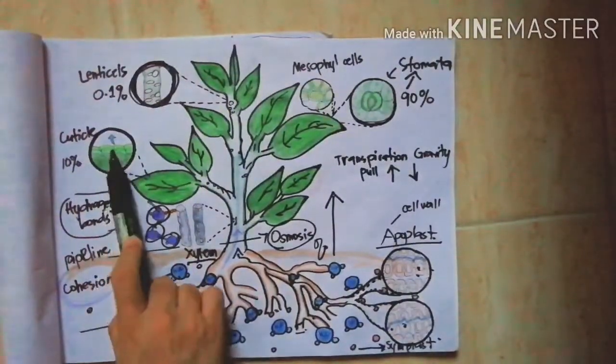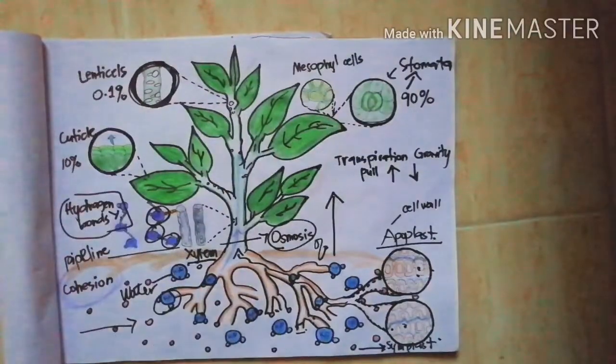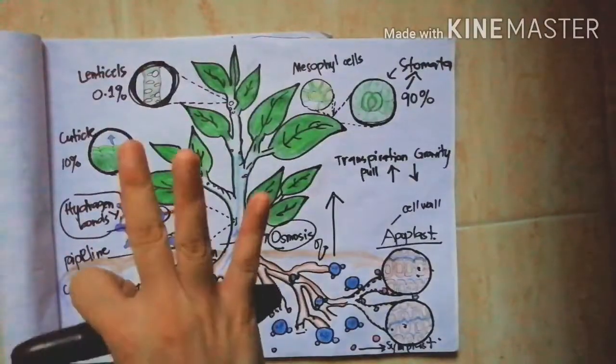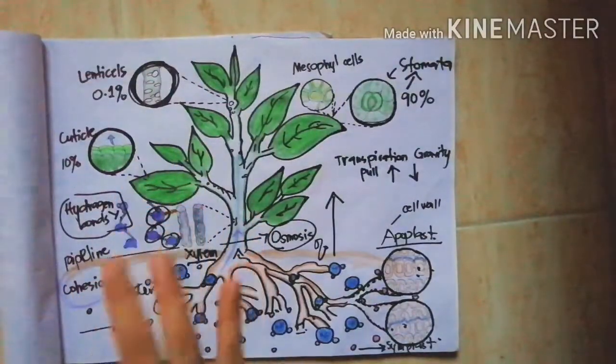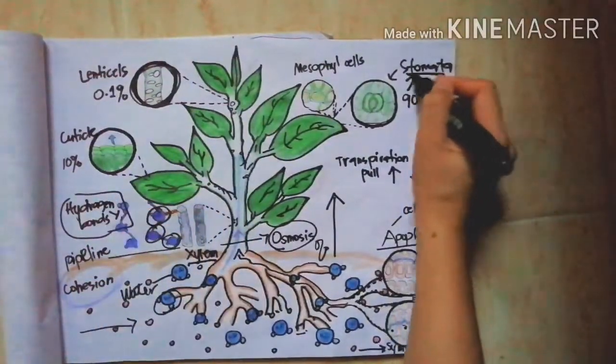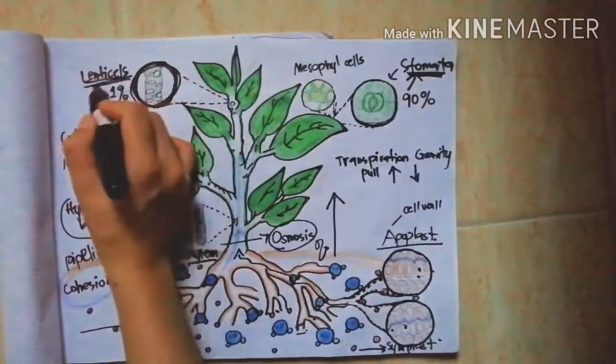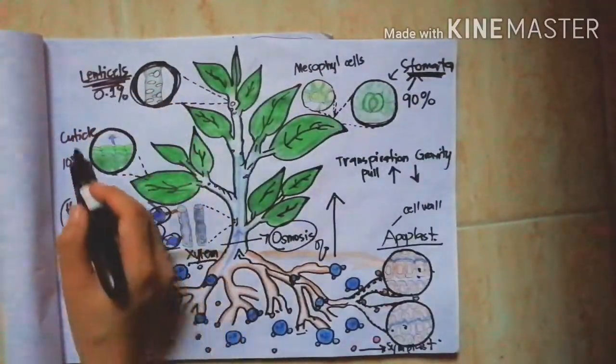Cuticular transpiration helps the leaf to reduce the amount of transpiration taking place. Still about 10% of total transpiration may take place through the cuticle. We can conclude that the transpiration in plants can be done in three ways: through stomata, lenticels, and leaf's surface or the cuticle.